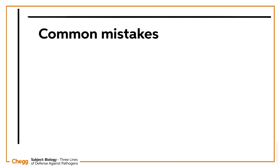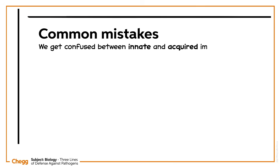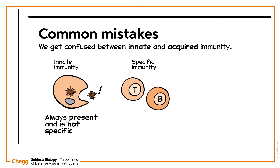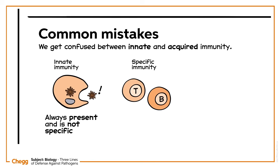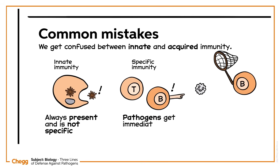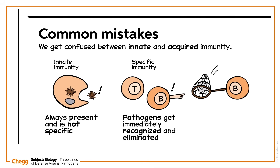Let's talk about some potential common mistakes. We often get confused between innate and acquired immunity. Innate immunity is always present and is not specific, whereas specific immunity involves the production of B and T cells that are tailored to the pathogen. Cells memorize the specific antigens produced during this process to ensure that when pathogens enter the body next time, they get immediately recognized and eliminated. This memory is called acquired immunity.